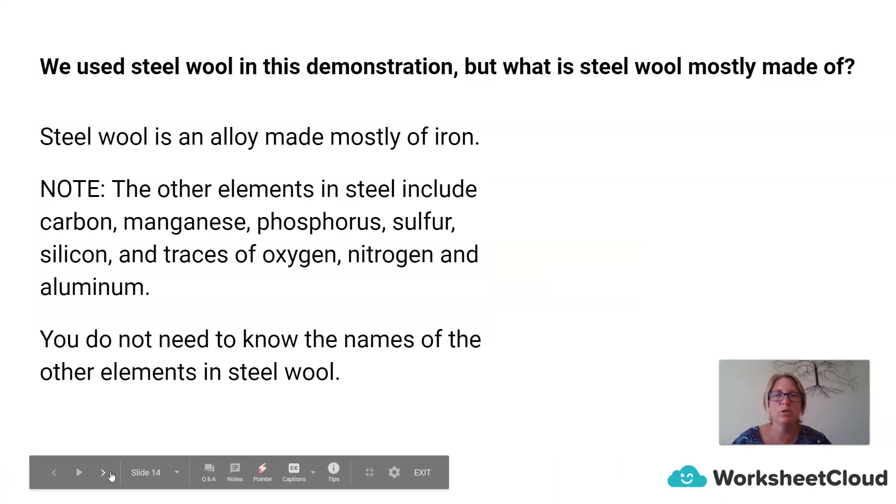So we used steel wool in this demonstration, but what is steel wool mostly made of? So steel wool is an alloy made mostly of iron. So note, the other metals in steel include carbon, manganese, phosphorus, sulfur, silicon, traces of oxygen, nitrogen, and aluminum. You do not need to know these names of the other elements in steel wool. For the benefits of this activity, let's focus on the fact that we are dealing with iron.